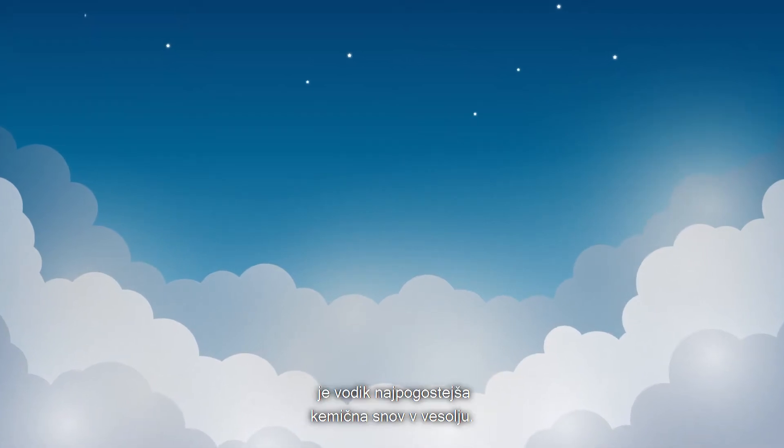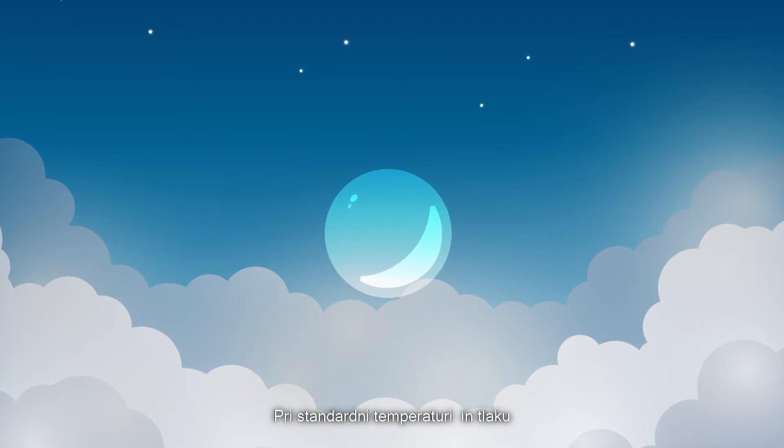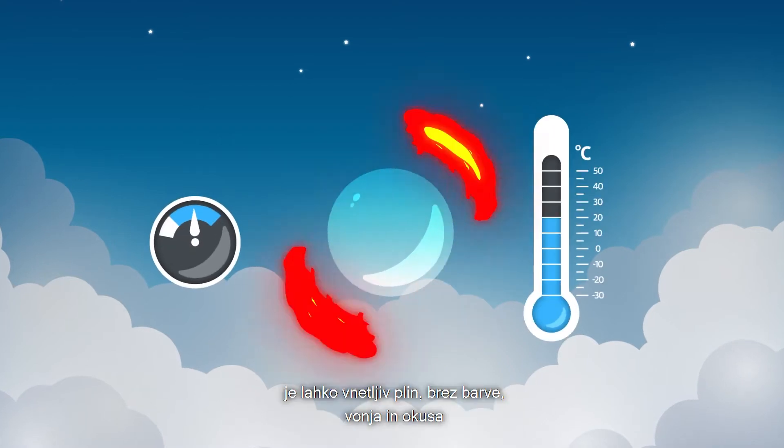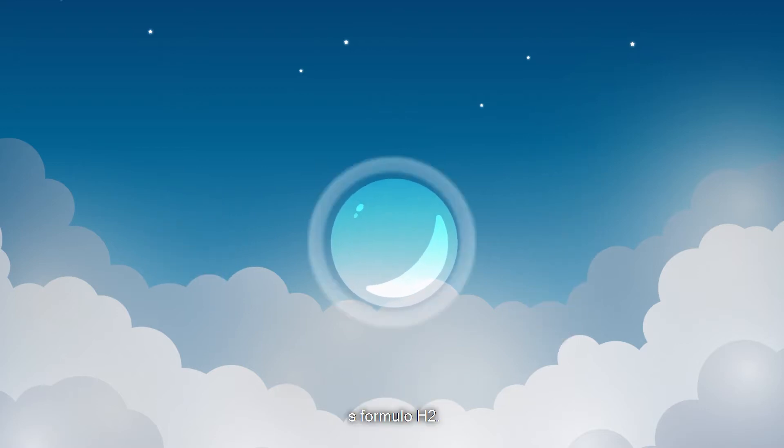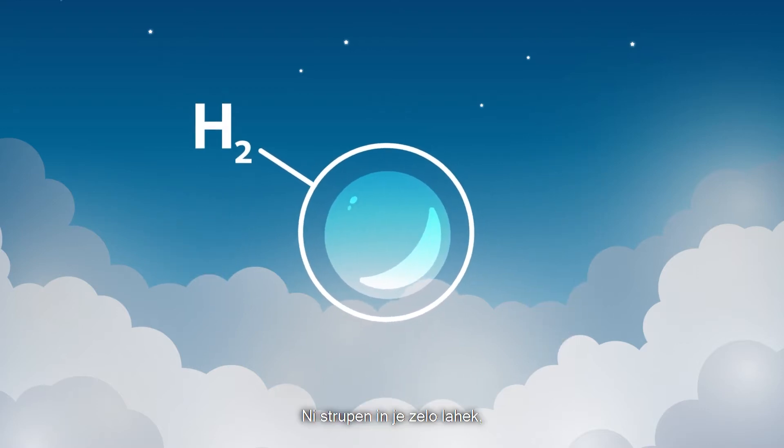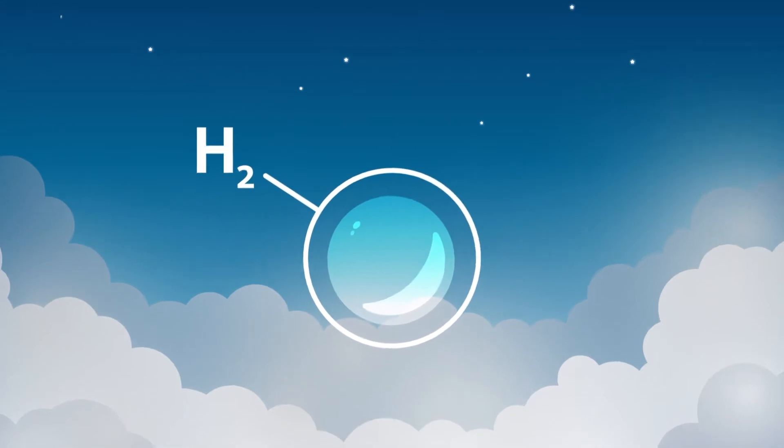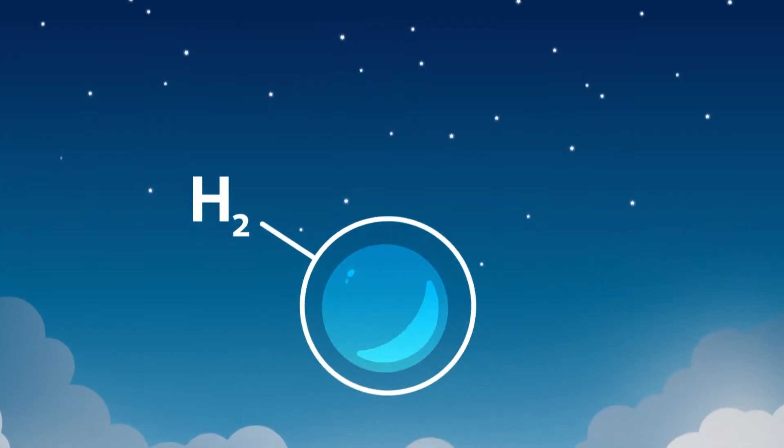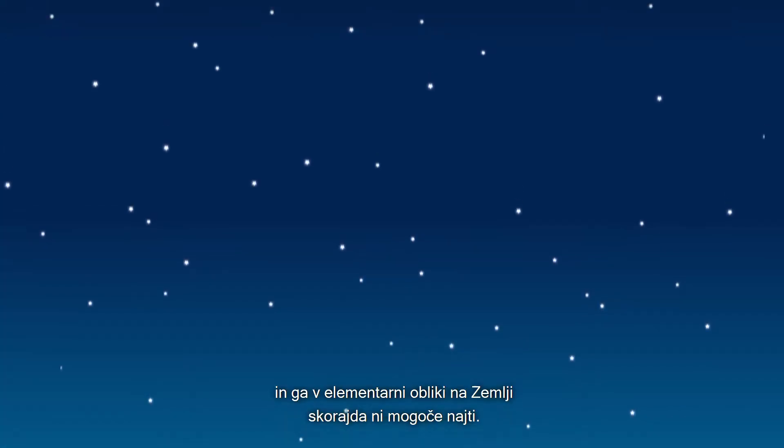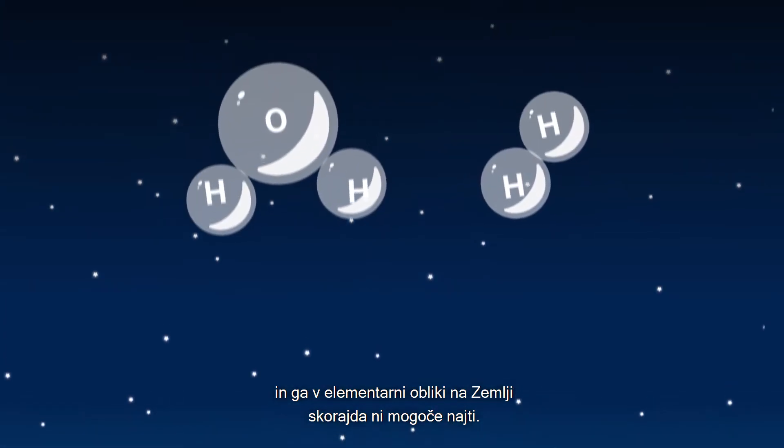In its elemental form, hydrogen is the most abundant chemical substance in the universe. At standard temperature and pressure, it is a highly flammable, colorless, odorless and tasteless gas with the molecular formula H2. It is non-toxic and very light, up to 14 times lighter than air, so it evaporates quickly and can rarely be found on Earth in its elemental form.